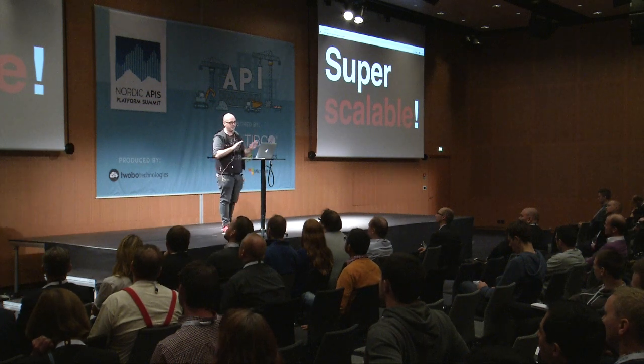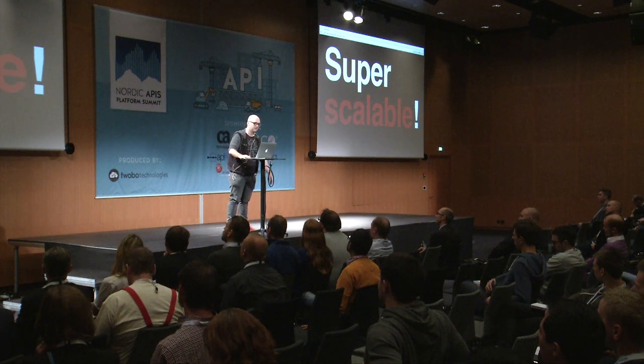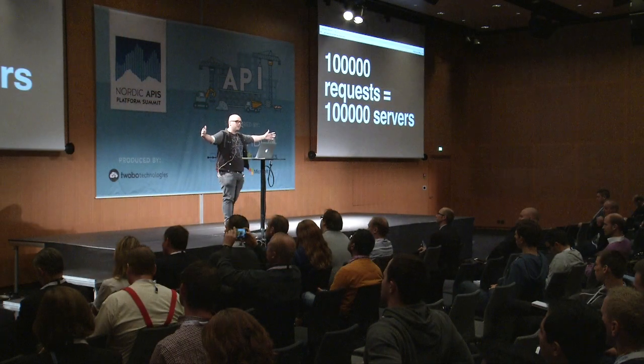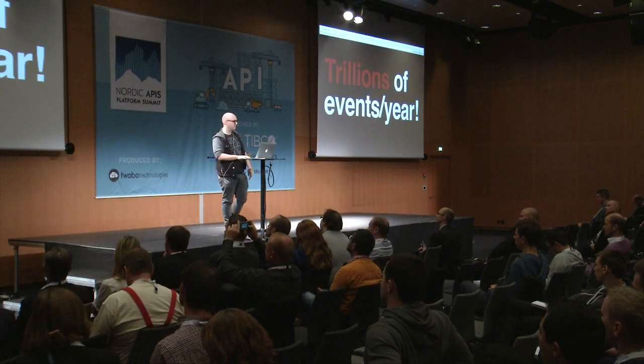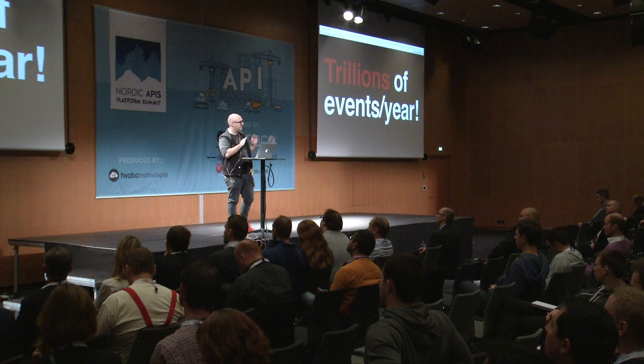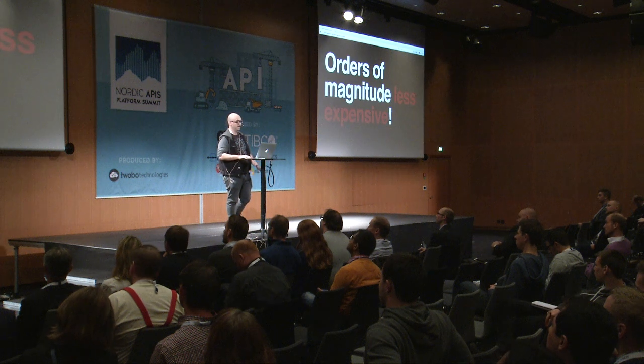This comes with a whole bunch of huge advantages. Number one is scalability. With a serverless infrastructure, each request corresponds to its own server — one request is one server — but this scales all the way up. Once you take the training wheels off your AWS account, you can go to literally trillions of events per year if you deploy your application globally, and that's just out of the box. You don't have to do anything to make that happen.